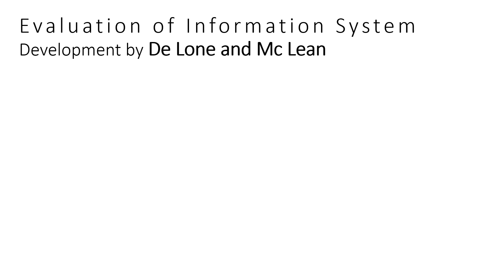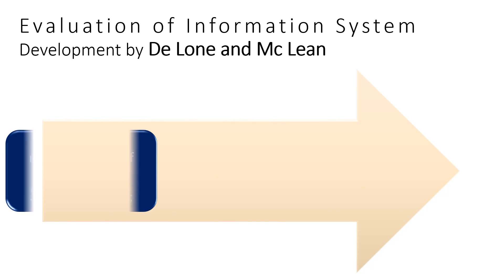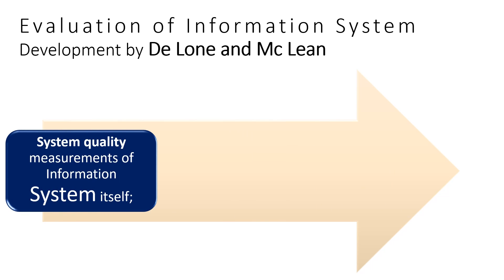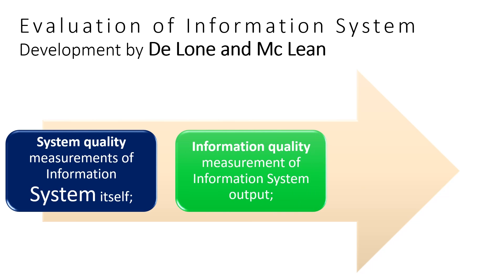Evaluation of Information System Development. Delone and McLean in 1992 attempted an evaluation of information system successfulness and proposed 180 traits of information systems, which they classified in six main categories. System Quality included measurements of the information system itself. Next, Information Quality included the measurement of information system output.